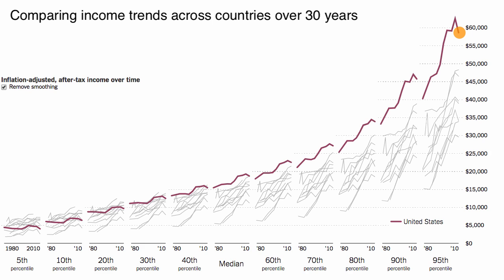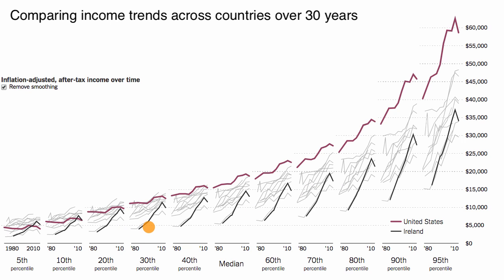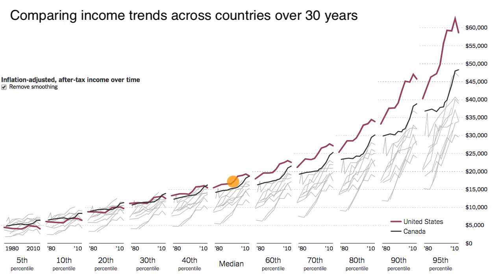There are several takeaways from this. One is that the rate of improvement in some of these other countries is steeper. But on the other hand, if we look at Ireland or Spain, the rate of improvement is steeper — especially for some of the lower percentiles — but folks still finish at an absolutely lower level. So even in 2010, you'd be better off being in the United States. Another question is: why do we see this phenomenon where the rate of growth in inflation-adjusted after-tax income seems to be highest for upper-income folks in the United States?